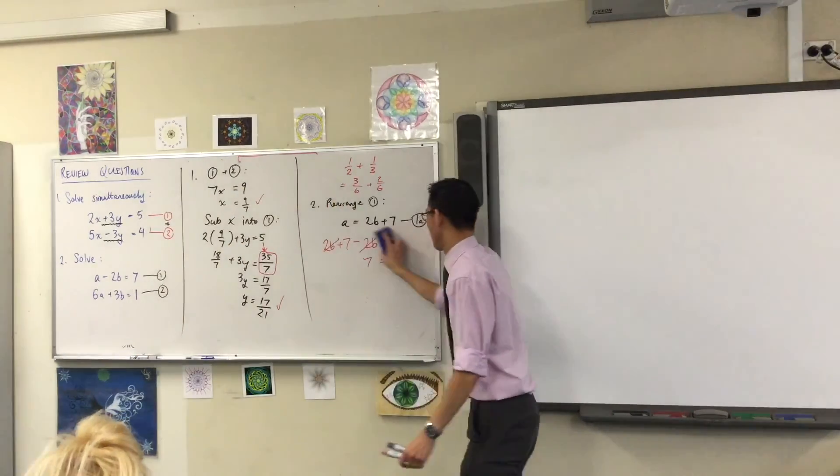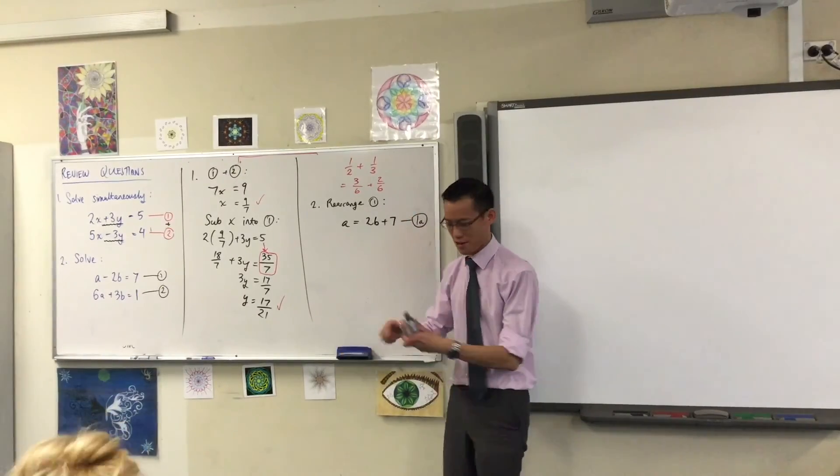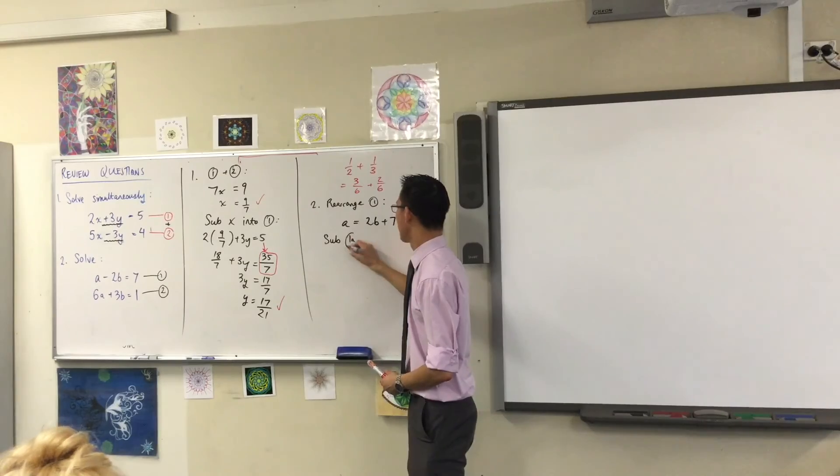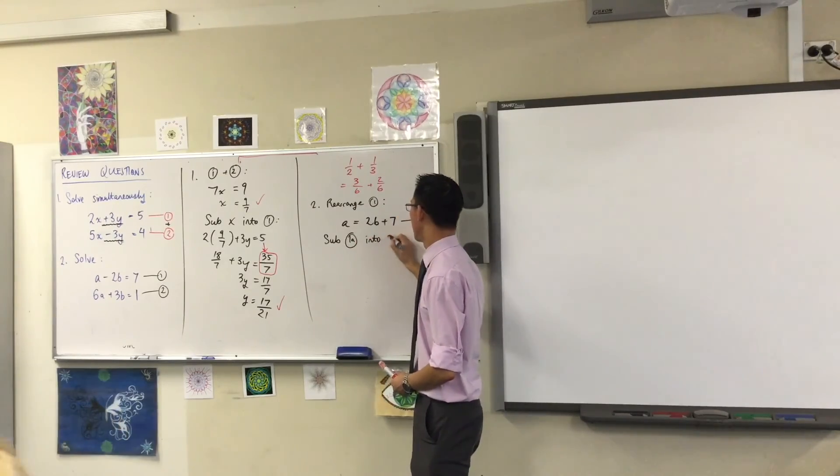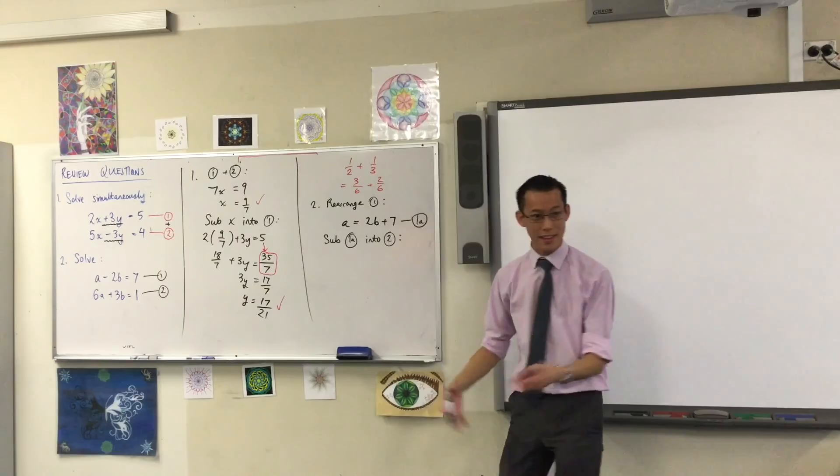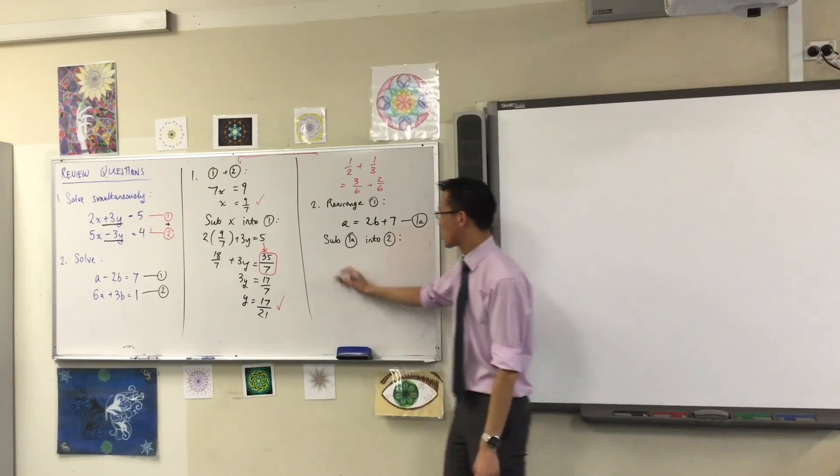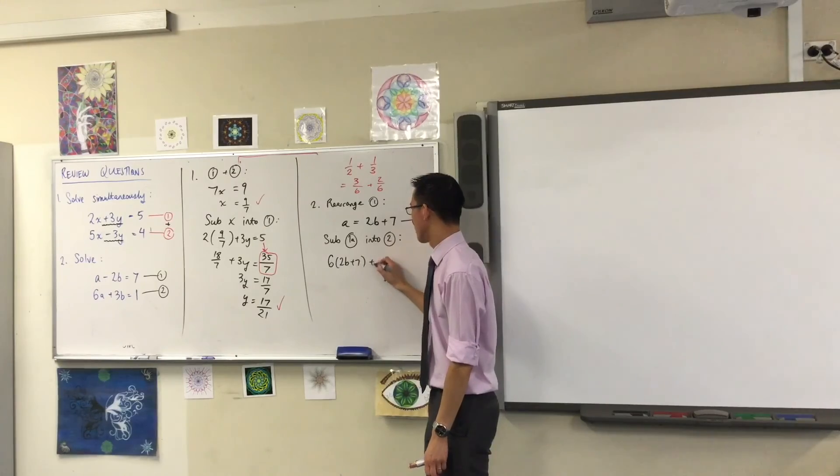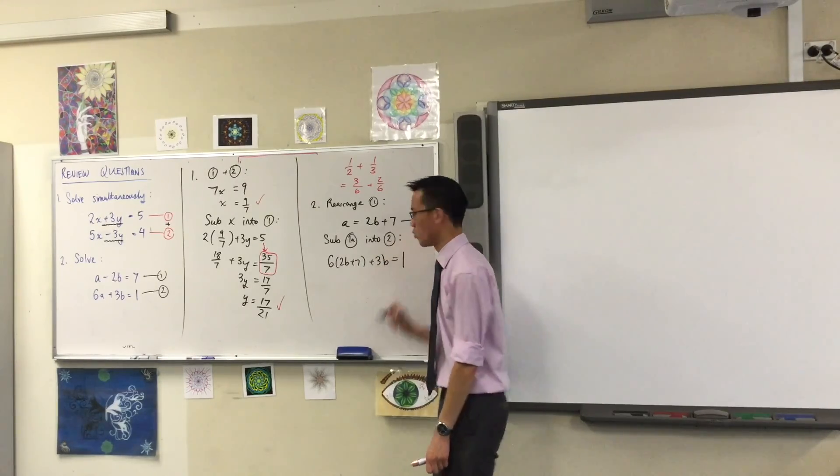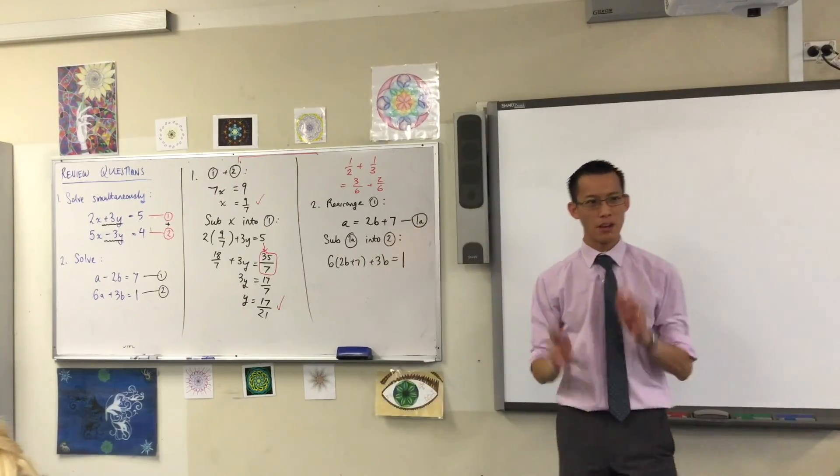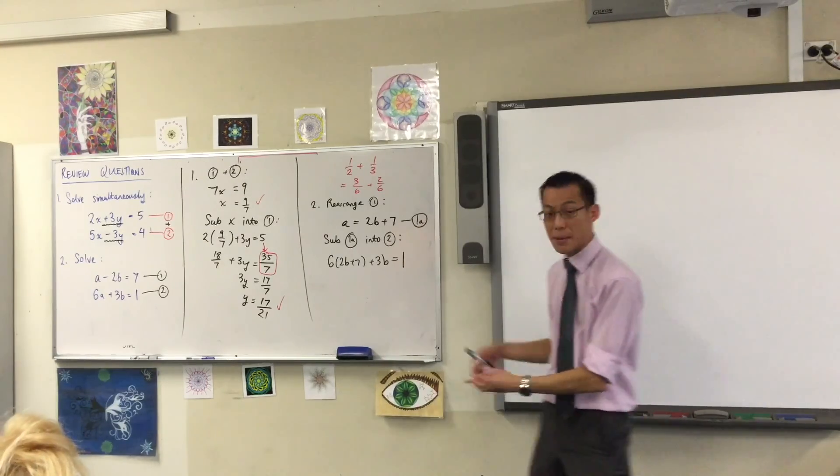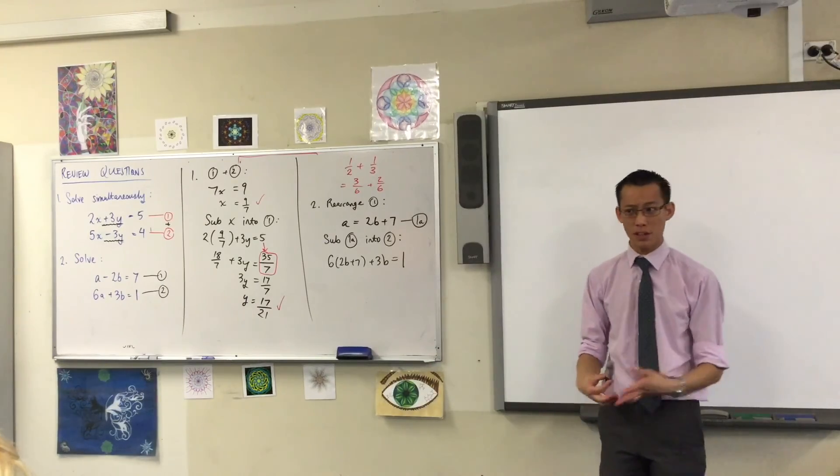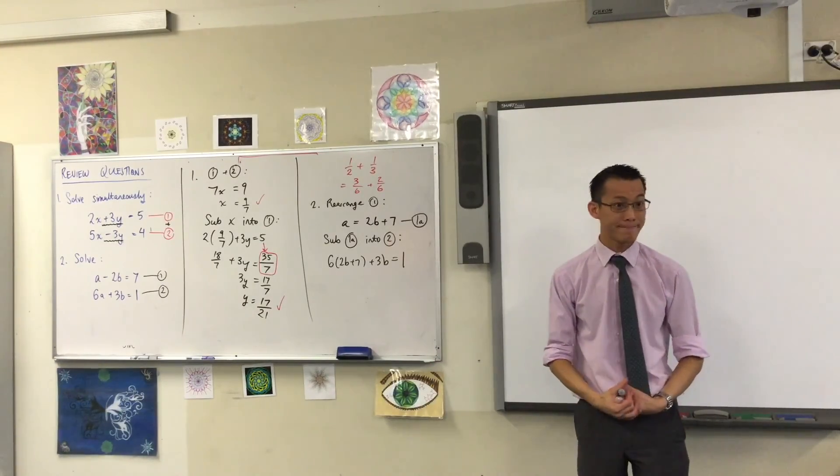Put it into the other equation. This is where the method gets its name from, so I'm going to have six lots of that, and then I'm just going to go ahead and solve. I don't think we need to finish that now. It's the same kind of skill that you were working on here, but you can have a go. If you want to check whether you got the right answer or not, just call me over later.